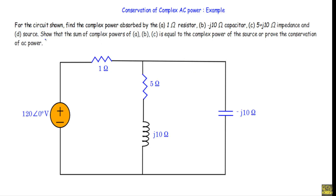We have to calculate the complex power absorbed by all these branches and the power supplied by the source, and show that the sum of the complex powers of branches A, B, and C equals the complex power of the source. This indicates conservation of AC power, which states that the power supplied by the source equals the complex power delivered to the loads — that means the one ohm, minus j10 ohm, and 5 plus j10 ohm impedances.